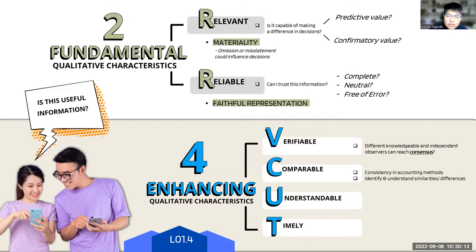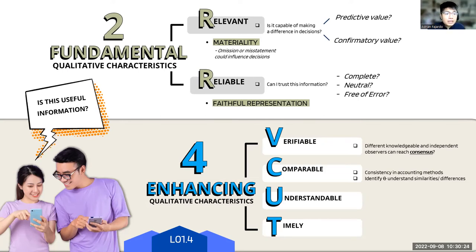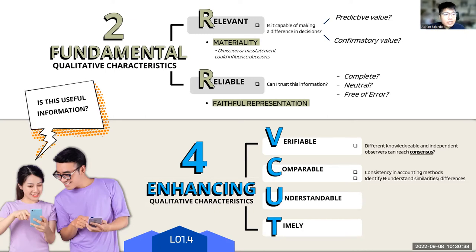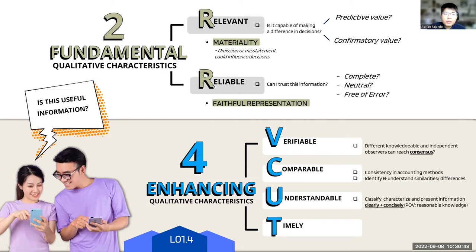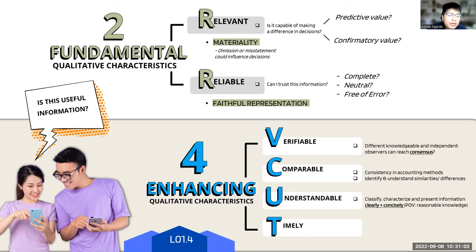Second: it should be comparable, meaning there is consistency in the accounting methods used so you can identify and understand similarities and differences. Same scenario, same treatment. Going back to accounting as a universal scorecard — you can objectively compare and contrast different kinds of companies because they have comparable information. The third enhancing characteristic is that it should be understandable, meaning you are able to classify, characterize, and present information clearly and concisely.